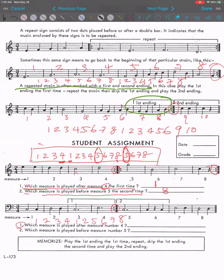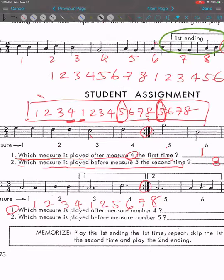Question 1: Which measure is played after measure 4? So the answer will be 1. Number 2: Which measure is played before measure 5? Measure 5 is here, so the measure before 5 will be 2.